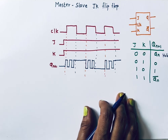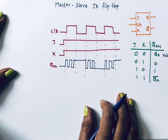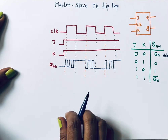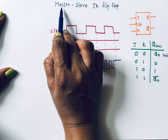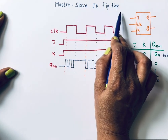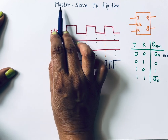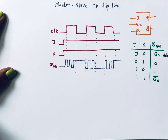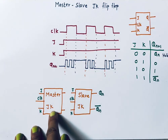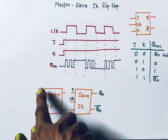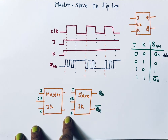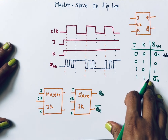You might say: instead of level-triggered flip-flop we can use edge-triggered flip-flop, and by using edge-triggered flip-flop we can solve this problem. Absolutely correct, but when we want level triggering we must solve that problem. To solve the race around condition, the master-slave JK flip-flop was introduced. The name itself says there is a master and there is a slave. There are two JK flip-flops; inputs are J, K, and clock, and outputs are Q and Q-bar.